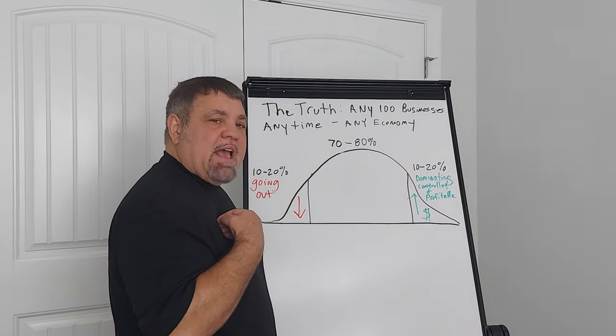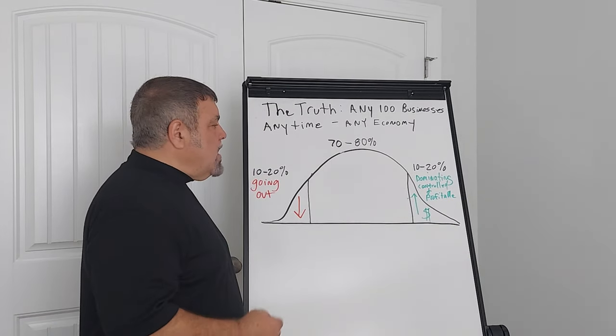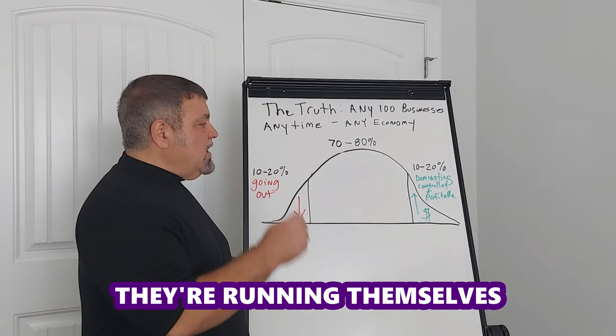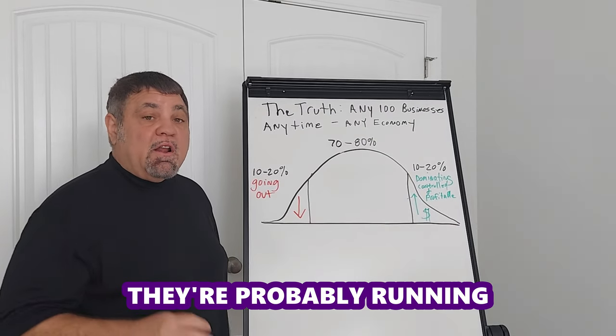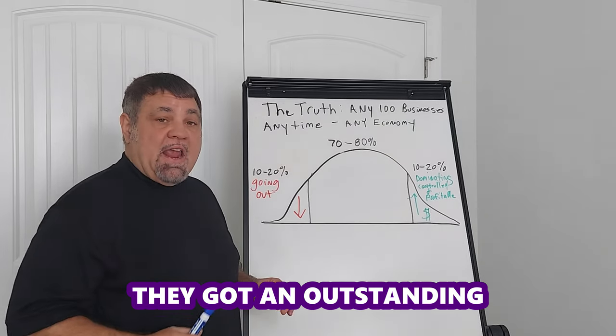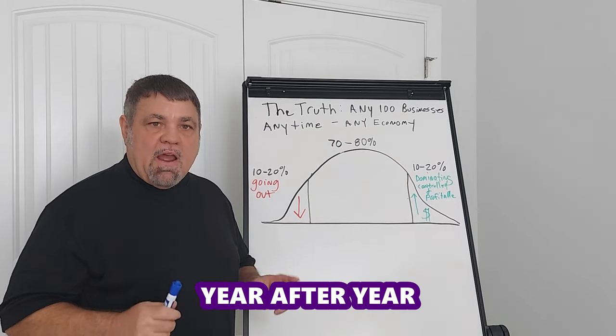But we do know something else, and this is interesting. 10, maybe 20, but I'm going to guess closer to 10 are absolutely dominating the market. They're the ones year after year, they're running themselves controlled, profitable. They're probably running their business by the numbers. They got an outstanding unique value proposition. They just dominate the market year after year.